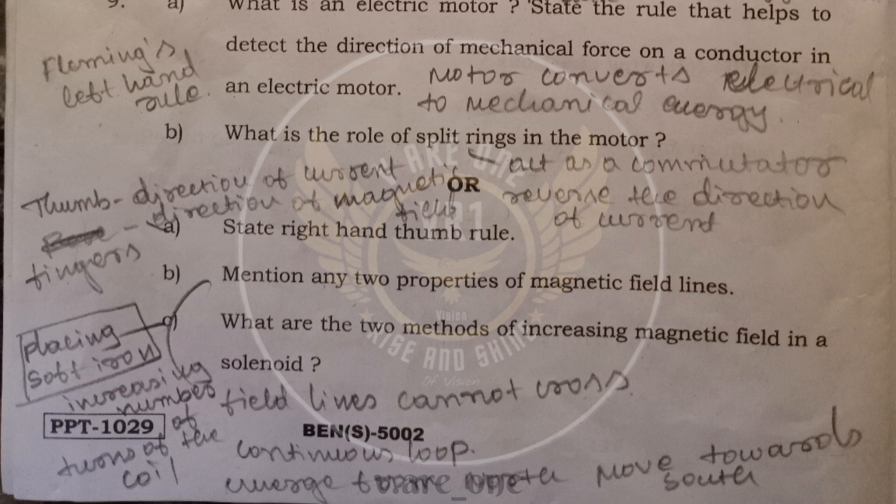And the properties of magnetic field lines are the magnetic field lines emerge from north and move towards the south. And these lines do not cross over. It cannot cross. And it forms the continuous loop around the conductor. And the methods to increase the magnetic field in a solenoid is placing the soft iron inside the solenoid and increasing the number of turns in the coil.